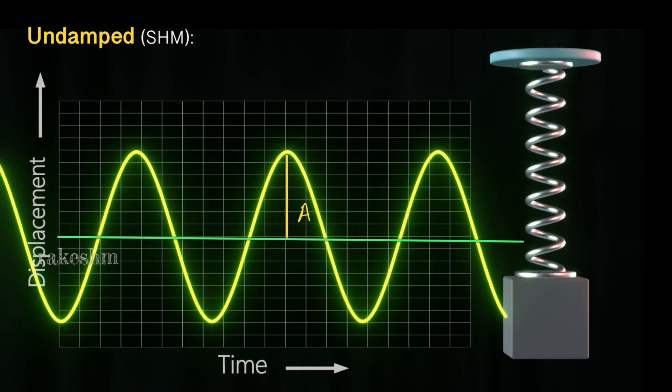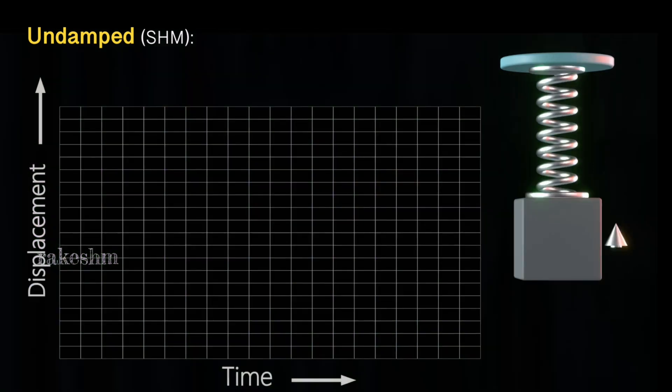We can observe from the displacement-time graph that the amplitude is not changing and there is no energy loss in this oscillation. Let us take a look at the force on this block and write down the SHM equation.